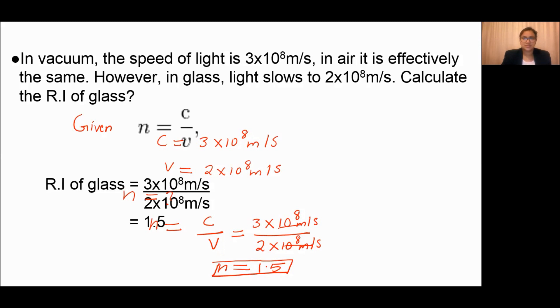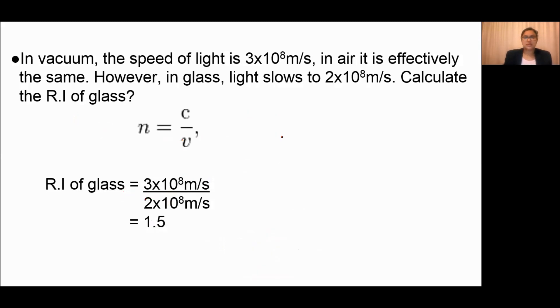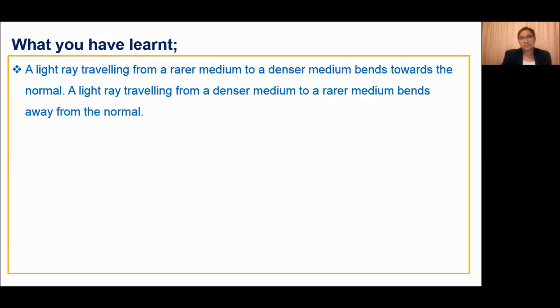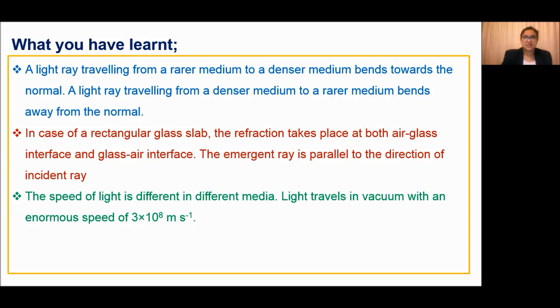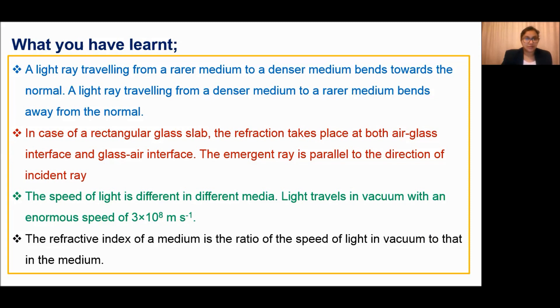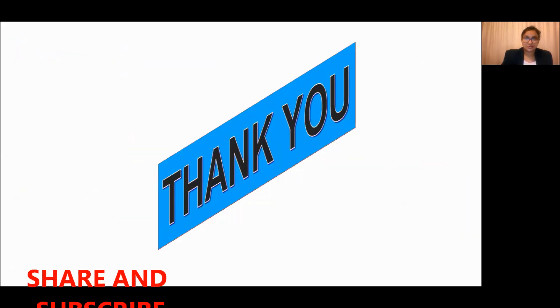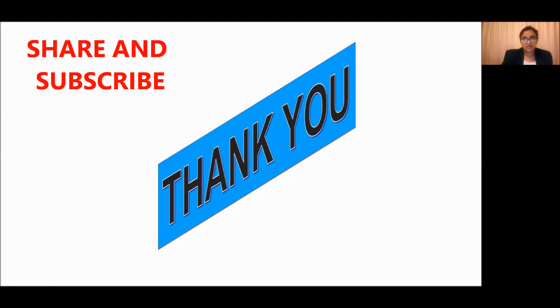Let us check — 1.5 is the answer. What have we learned here? Light travelling from a rarer medium to a denser medium bends towards the normal. Light travelling from a denser medium to a rarer medium bends away from the normal. In a rectangular glass slab, the emergent ray is always parallel to the incident ray. The speed of light is different in different media — 3 × 10⁸ m/s in vacuum. The refractive index of a medium is the ratio of the speed of light in vacuum to that in the medium. Thank you for watching this class — please comment and subscribe to the channel.